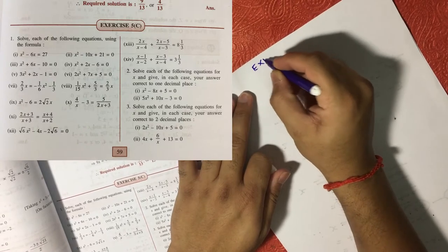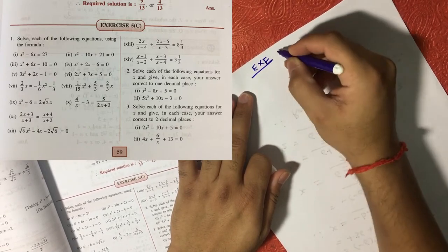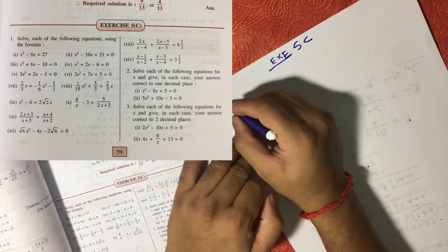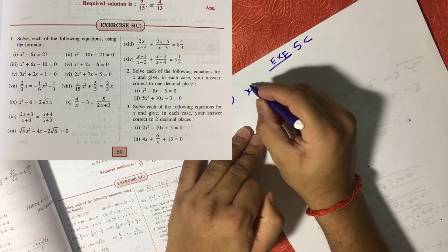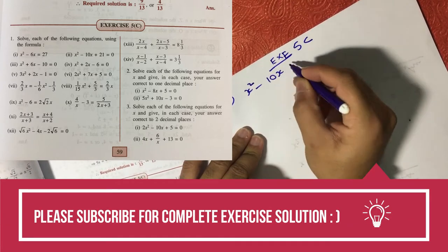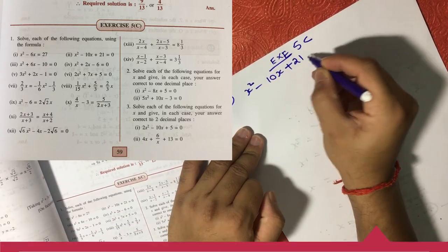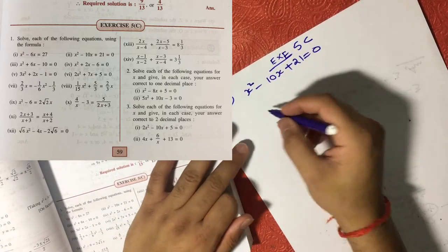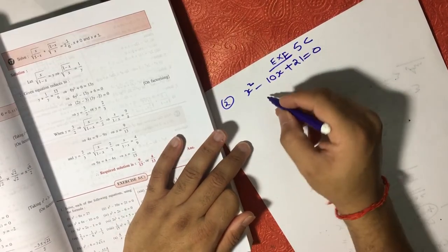I am writing Exercise 5c and question number 2 is x² - 10x + 21 = 0. Same thing, first of all we need to identify a, b, c here in terms of numerical values.